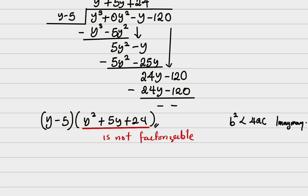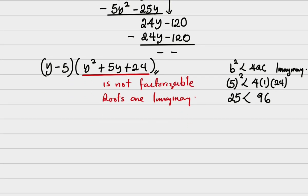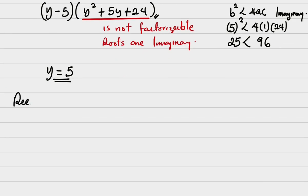So we can check. b is coefficient of y in this case, so it's going to be 5. So I have 5 squared. We have 4. A is coefficient of y squared, which is 1. Then c is 24. You can see that 25 is actually less than 96. So the roots are imaginary. The only thing we can work with is y equals 5. That is, the only existing or real value that can actually be a solution to the polynomial. So if y equals 5...